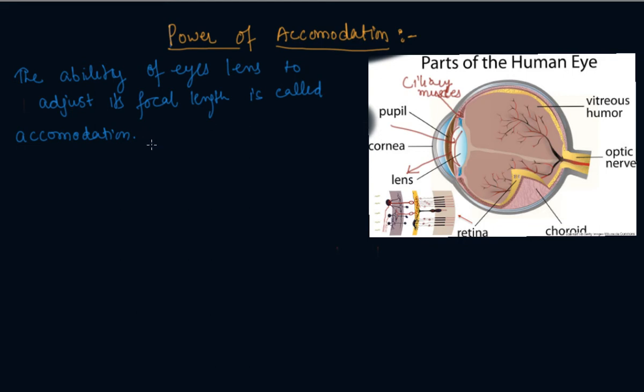However, the focal length of the eye lens cannot be decreased below a certain minimum limit. So there is some limit of minimum focal length. It cannot be decreased beyond that point.